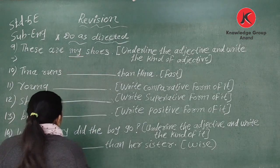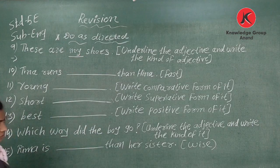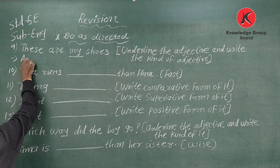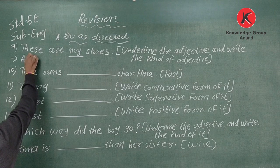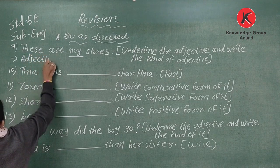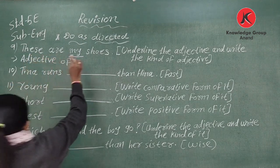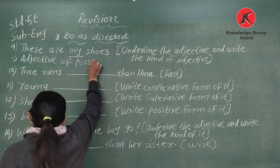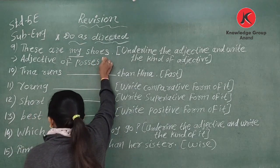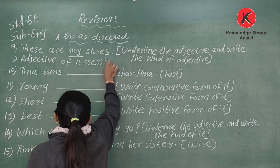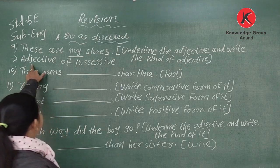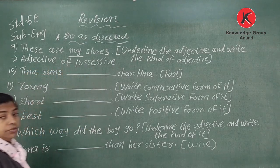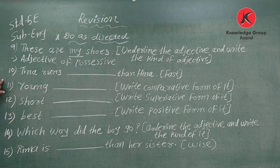So we have our types of adjectives: adjective of quantity, adjective of quality, possessive adjective, and demonstrative adjective. The adjective here is possessive — P-O-S-S-E-S-S-I-V-E. Number ten: